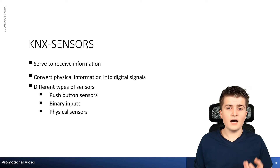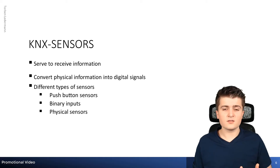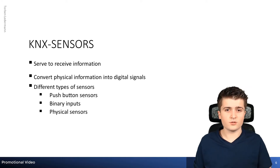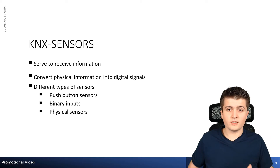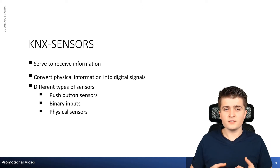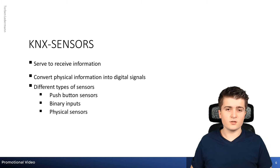The last bigger group of sensors are the physical sensors. These include sensors such as temperature sensors, weather stations, or humidity sensors for fan control. There are a lot of different sensors, and again a sensor might fit into multiple groups — for example, a push button sensor can also have a temperature sensor inside it, which you can use for your heating control.